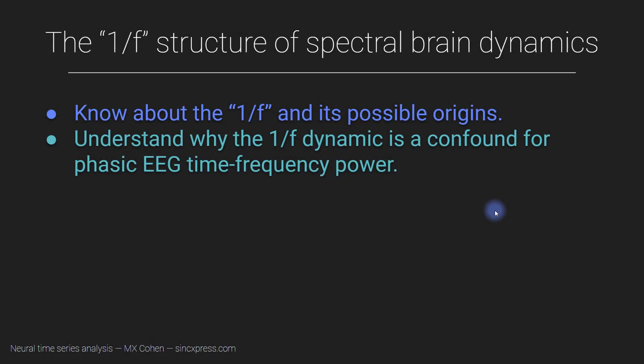In this and the next video, I am going to talk about this thing called 1 over f. It's often called 1 over f, and it refers to the structure of the power spectrum of brain dynamics. Not only brain dynamics, many physical and biological systems exhibit spectral features that approximate a 1 over f-like distribution. I've already introduced this idea of 1 over f in the very beginning of this course when I talked about simulating pink noise or 1 over f noise.